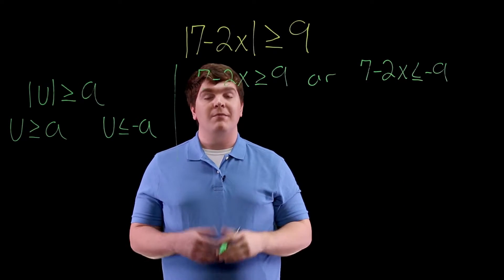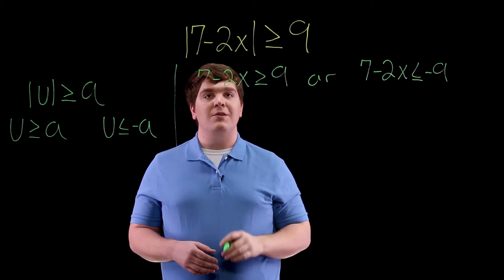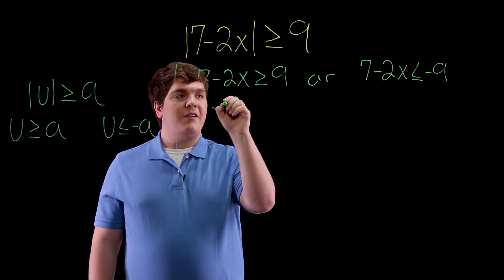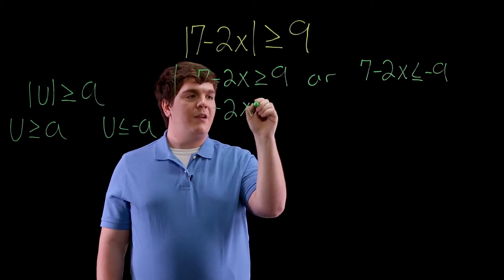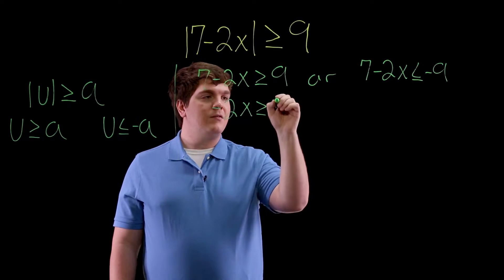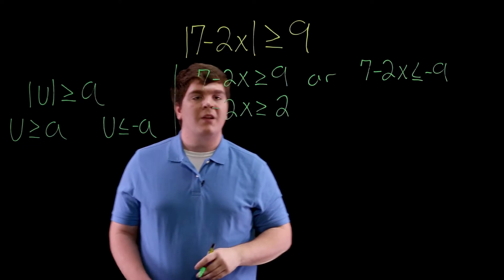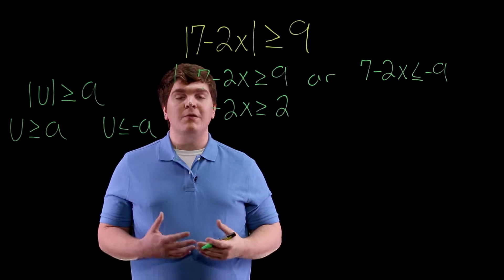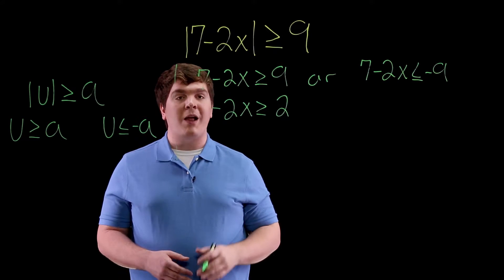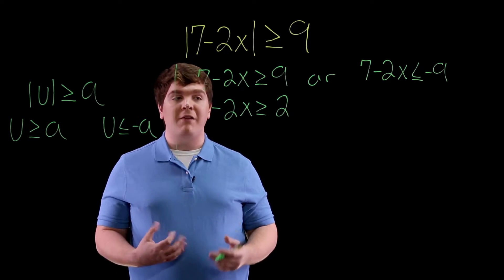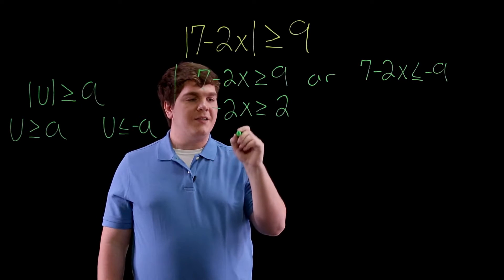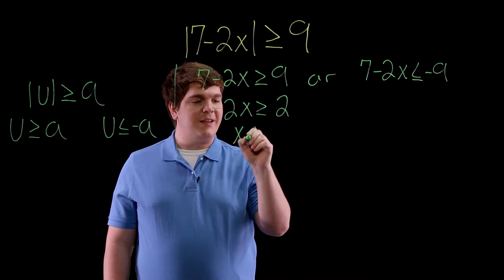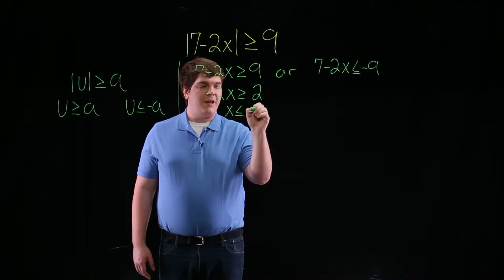Solving the first equation, since we're trying to find the values of x which satisfy this, we can subtract 7 from each side, leaving us with negative 2x is greater than or equal to 2. Here we divide each side by negative 2, and remember that any time you multiply or divide an inequality by a negative number, you have to flip the sign. So dividing by negative 2 leaves us with x is less than or equal to negative 1.